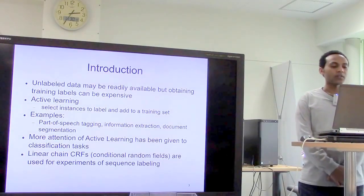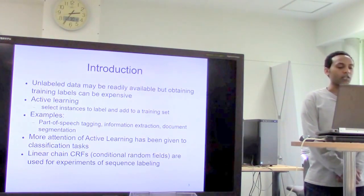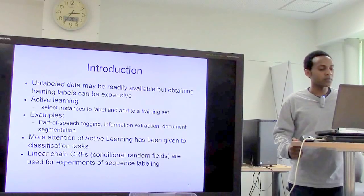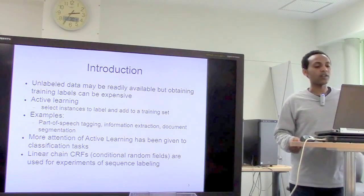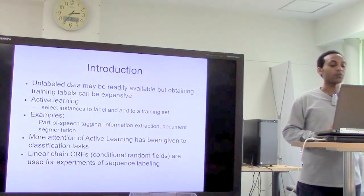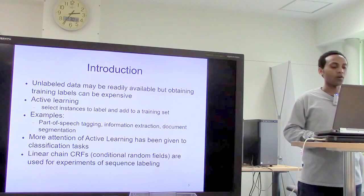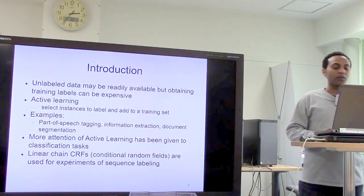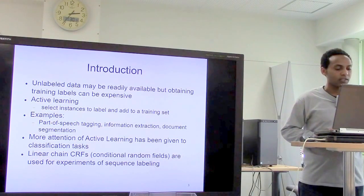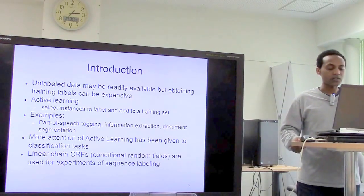In this paper, the authors focus on sequence labeling tasks. Examples include part-of-speech tagging, information extraction, and document segmentation. Previously, most attention has been given to classification tasks, but sequence labeling tasks differ in that the proper order of sequence and context information must be taken into account. The authors performed experiments using linear chain conditional random fields, or CRFs.